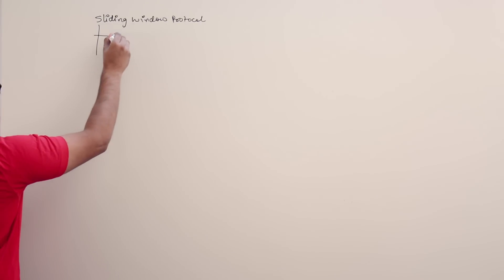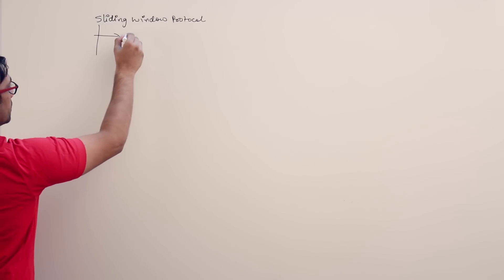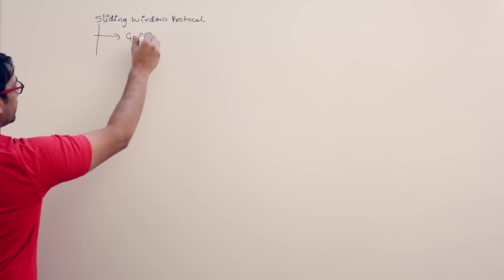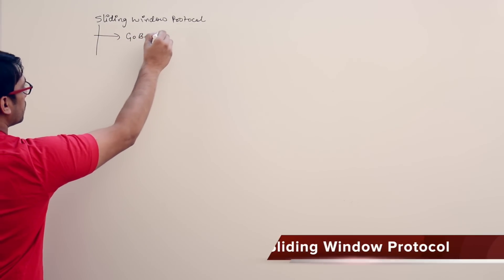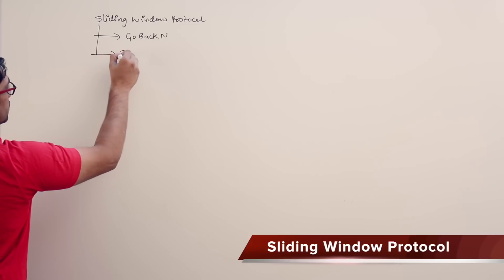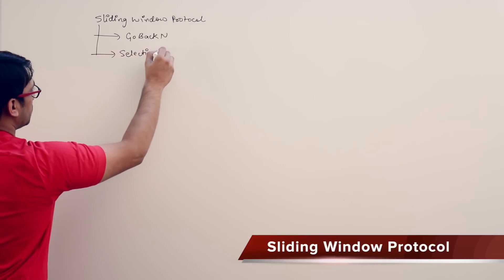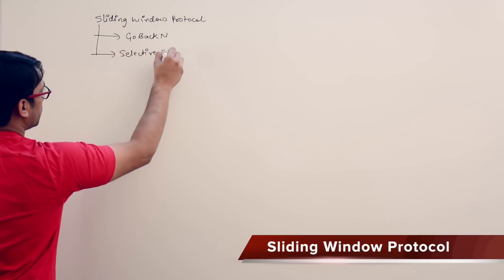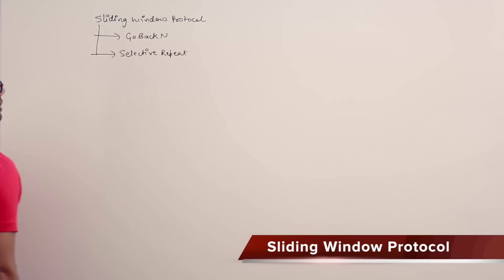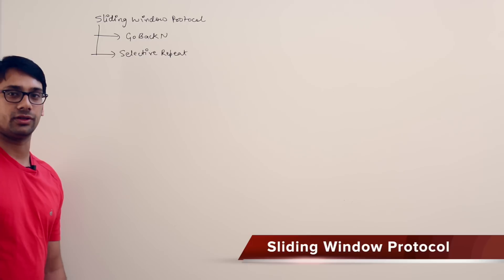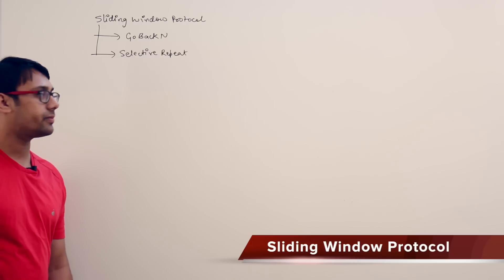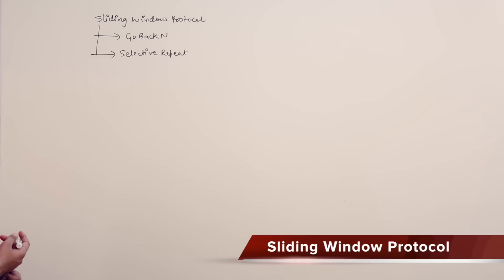There are two implementations of the sliding window protocol: number one is Go-Back-N, and the second one is Selective Repeat. We are first going to discuss what the sliding window protocol is, and then we'll discuss Go-Back-N and Selective Repeat protocols.